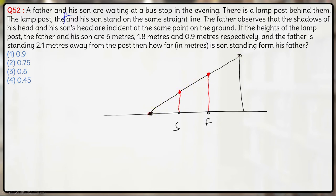That means the lamp post, the father's head, the son's head and this shadow here, this is the length of shadow of the son and this is the length of shadow of the father. All these four points are in the same line because light travels in a straight line.